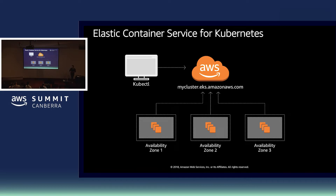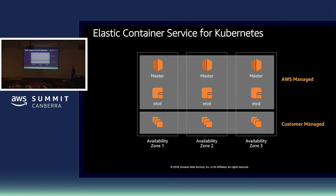Here's a deeper dive into what that looks like under the covers. We have our master nodes, where all the exciting stuff happens within the cluster. We schedule our tasks or containers out to the outside world. We have our etcd instances — that's our data store where our Kubernetes configuration is stored. Then we have our worker nodes, which are in our customer-managed domain. We bring our own EC2 instances, connect them to the cluster, and schedule our workloads from there.